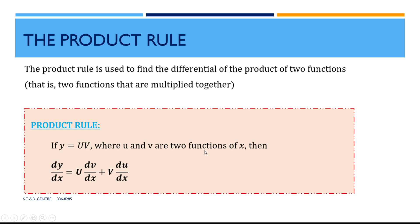The product rule is used to differentiate a product of two functions — meaning when we have two functions that are being multiplied together. So the product rule states: if we have y equal to uv, where u and v are functions of x, then dy/dx is equal to u(dv/dx) plus v(du/dx).